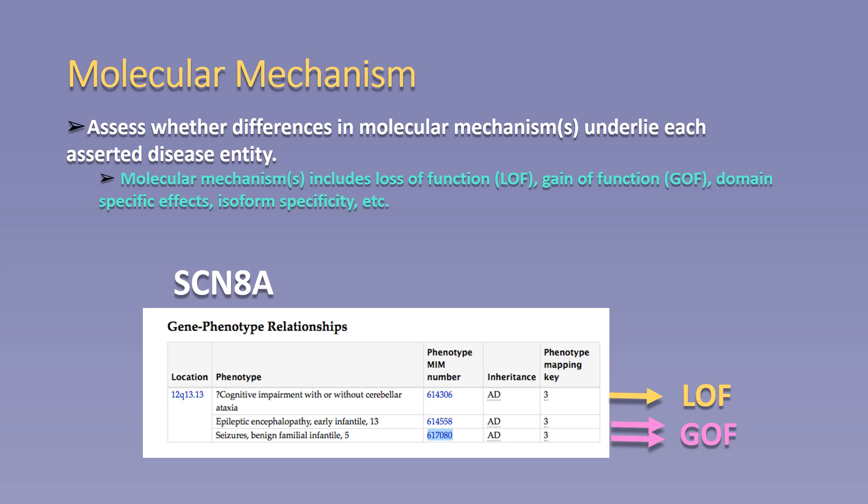Sometimes the molecular mechanism is not always clear or is in question. In these cases, it is best to assess whether the disease entities asserted have overlapping variation in the gene of interest or distinct variants between the asserted disease entities. Overlap of variants between two asserted disease entities indicates a disease spectrum and lumping of those entities for a single curation. Distinct variants may indicate a difference in molecular mechanism, and the remaining criteria should be evaluated before making a formal split, especially in the absence of a defined molecular mechanism.